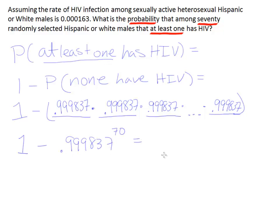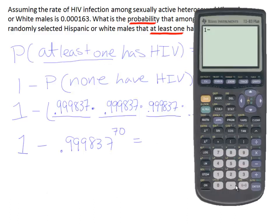Let's evaluate that. We have 1 minus 0.999837 raised to the 70th power. When we're done, we get 0.01134 — or basically 1.1% roughly.